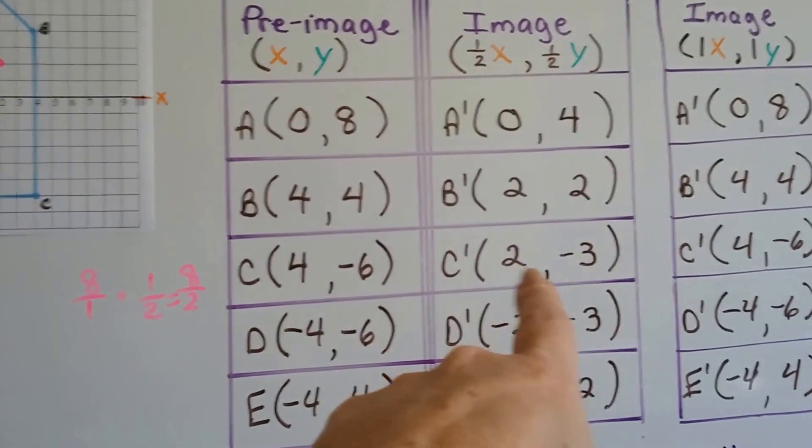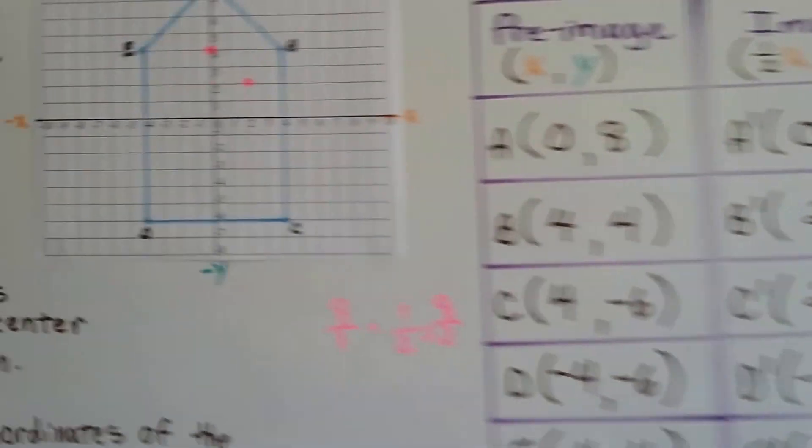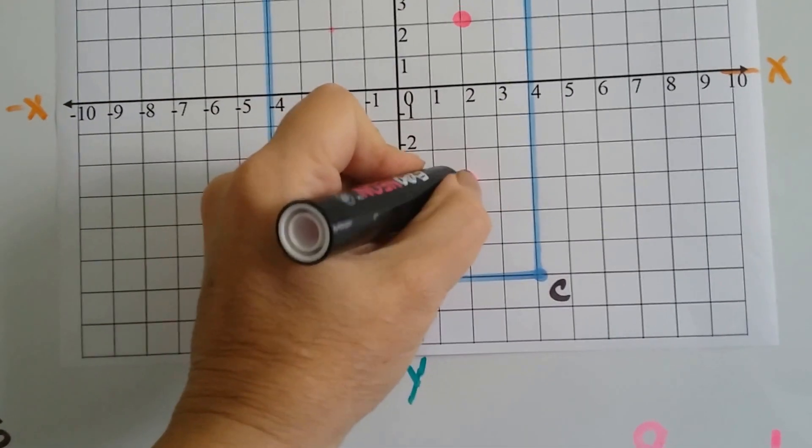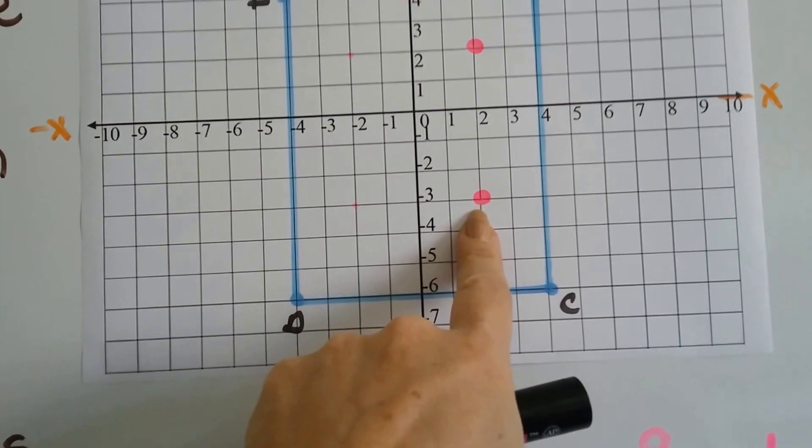c prime is going to be positive 2, negative 3. So we find positive 2 on x and go down to negative 3 and it's right there. So that's c prime.